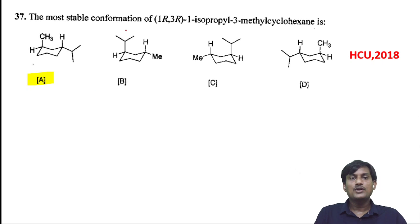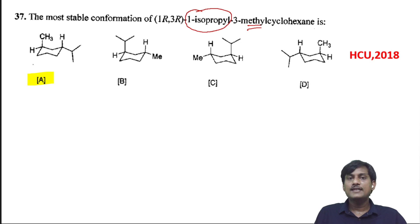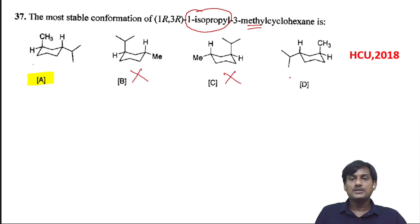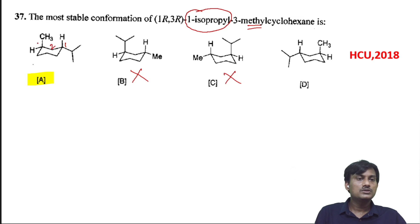The most stable conformation of 1R,3R-1-isopropyl-3-methylcyclohexane: the isopropyl group should be at the equatorial position since it is a bulkier group compared to the methyl group. So the isopropyl group should be at equatorial position. We need to determine the configuration — 1R and 3R — giving numbering from carbon 1, 2, 3.